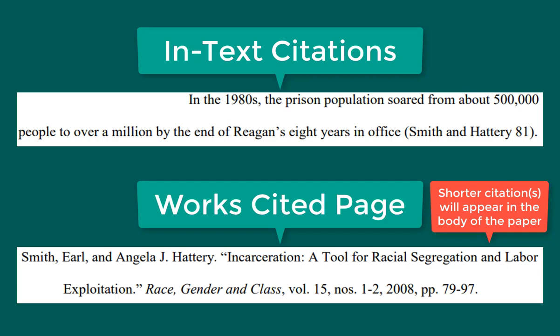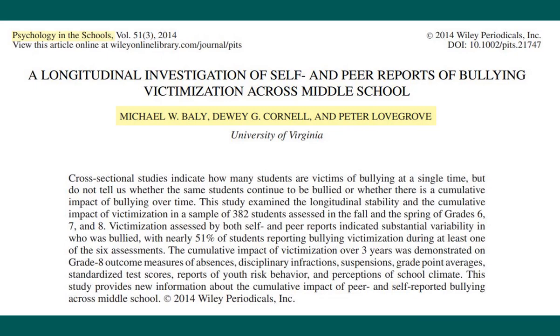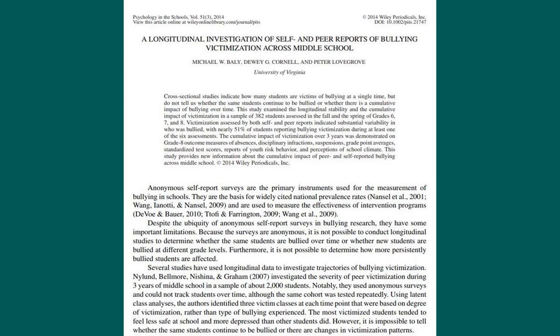First, let's identify where you will find the information needed for your Works Cited citations. For a journal article, information needed for your citations is typically found at the top or the bottom of the article. You'll need the title of the article, the author or authors' names, the journal title — which is the name of the journal where the article is published — the year of publication, and the volume number and issue number. These numbers show exactly when the article was published. The volume number always comes before the issue number, and sometimes there is no issue number. You'll also need to include the page numbers and the DOI if your source has one. DOI stands for Digital Object Identifier, and it's a unique identifier specific to each article. This information can be found in both the PDF of the article and the database entry for the article.